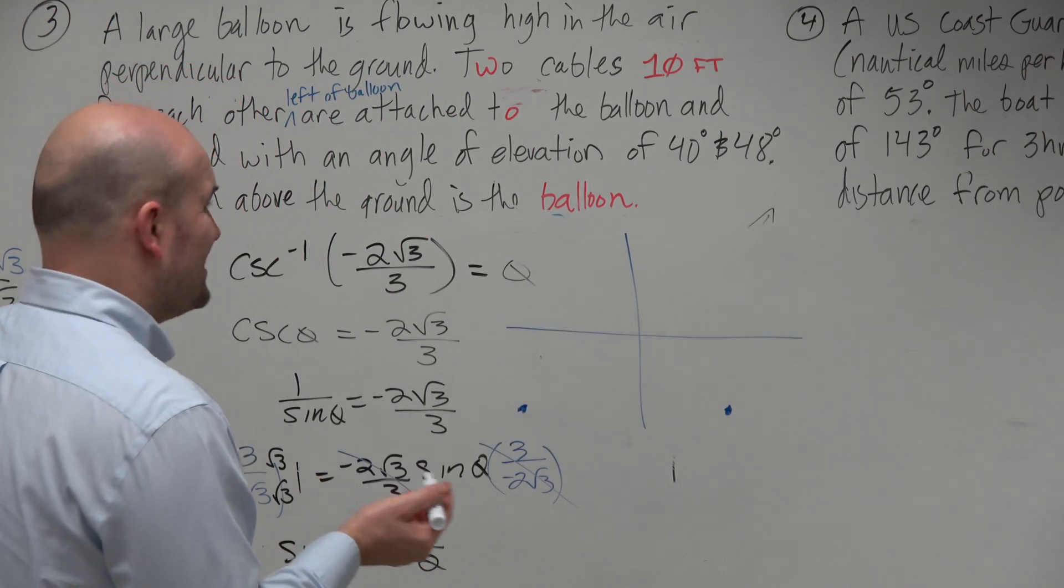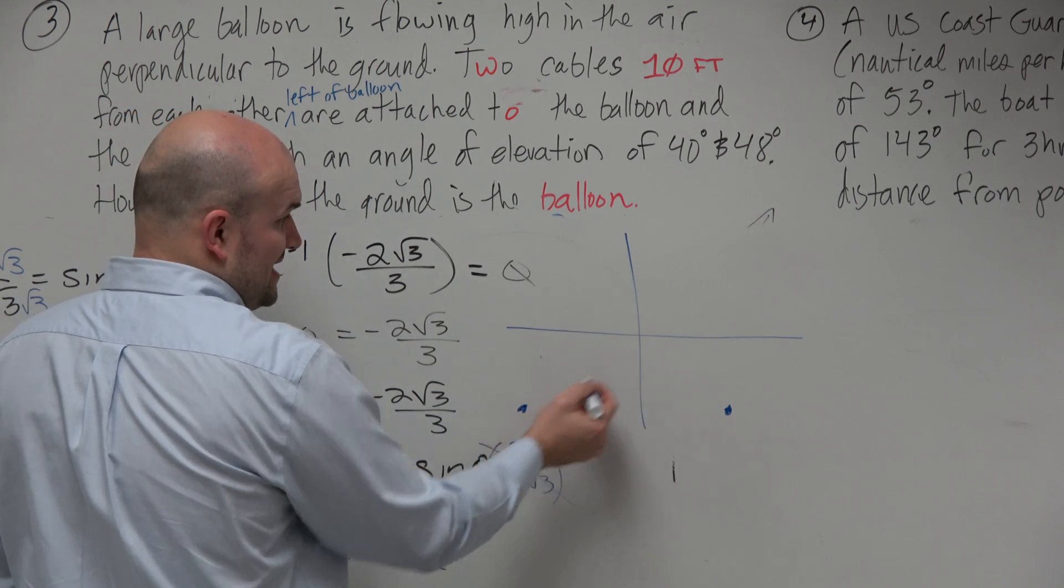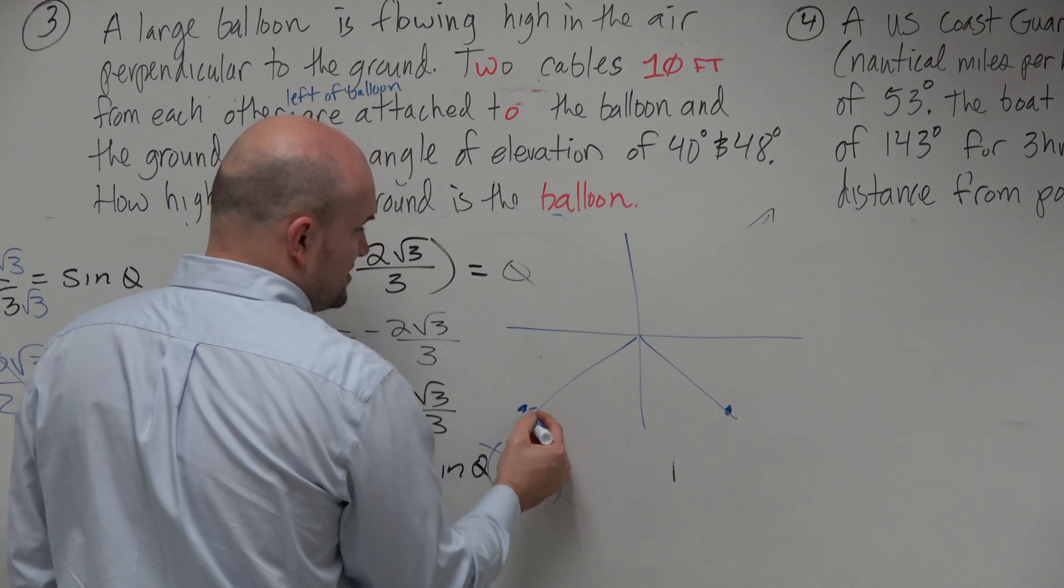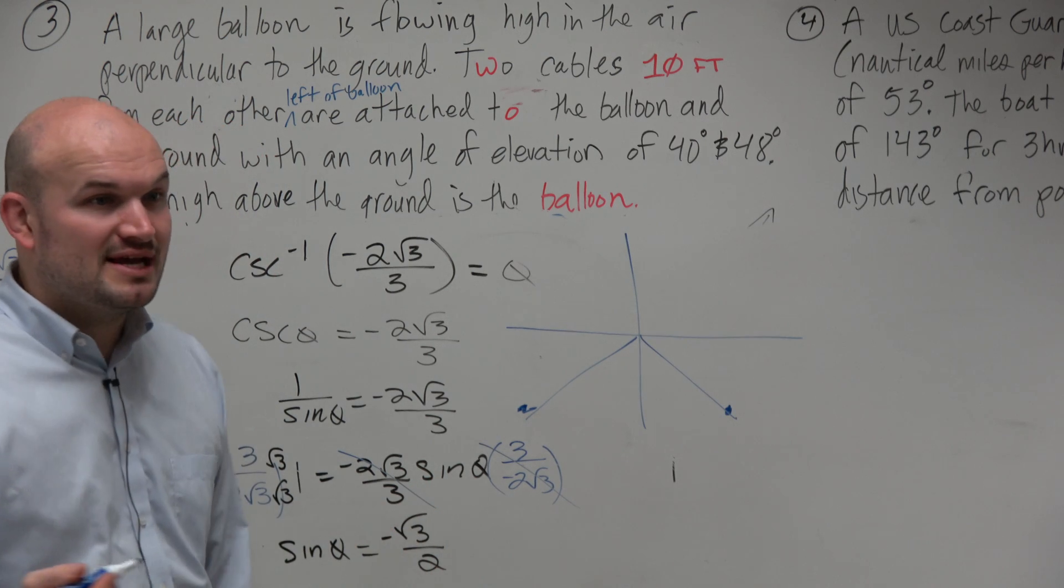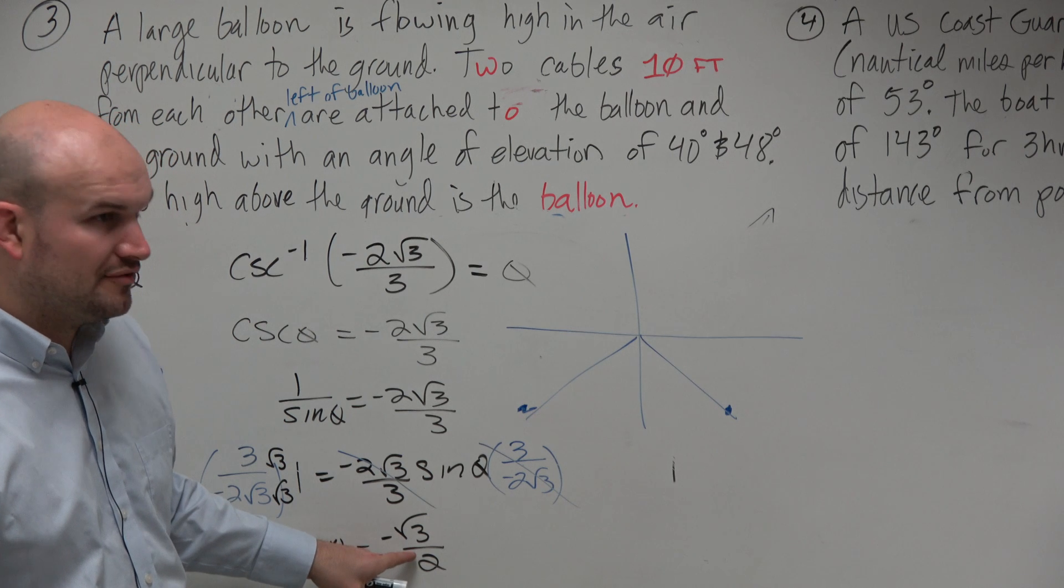Well, that's going to have a reference angle of, anybody know? We know that the angles are going to be down here, the terminal side. These points are down here. But does anybody know what the reference angle is that gives us, or the angle that gives us in the first quadrant, that gives us sine of square root of 3 over 2?